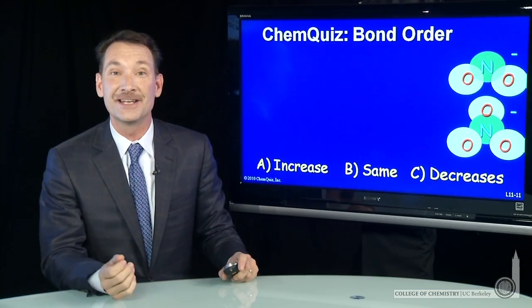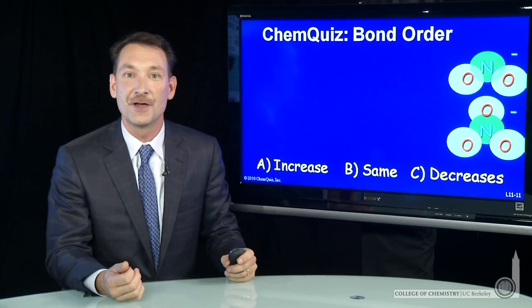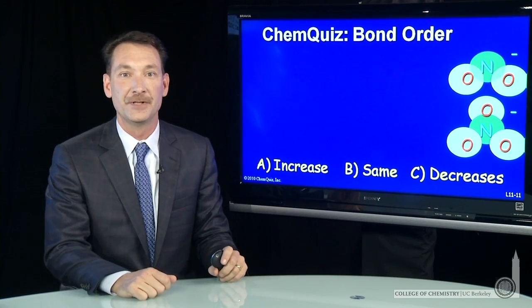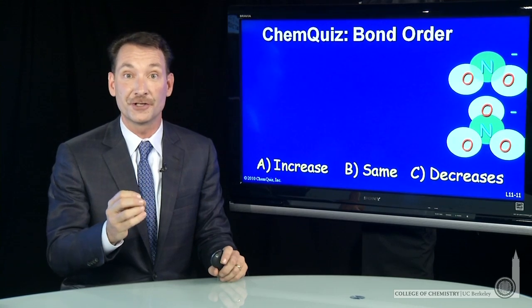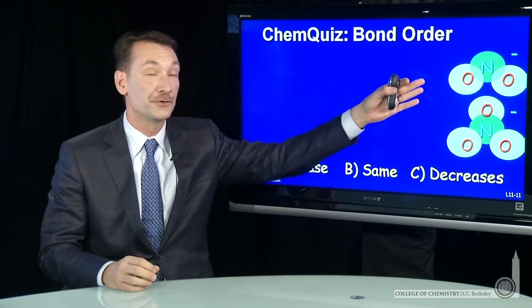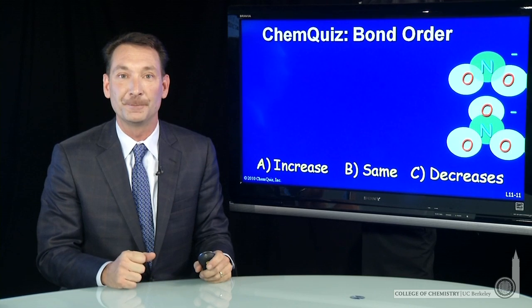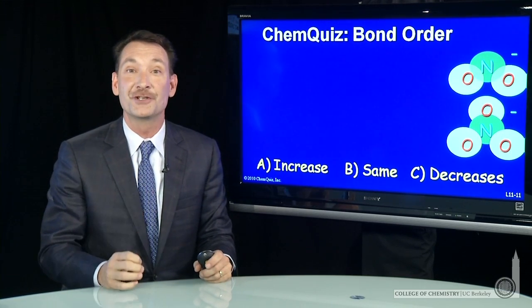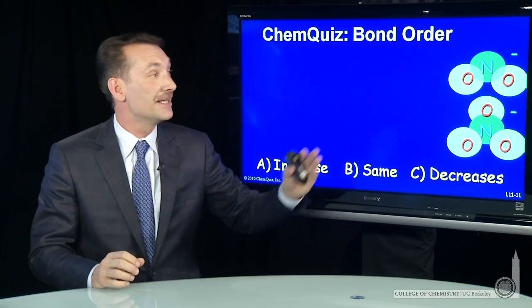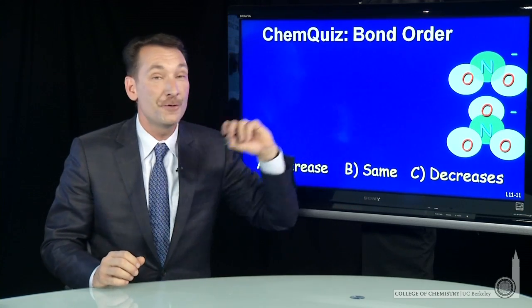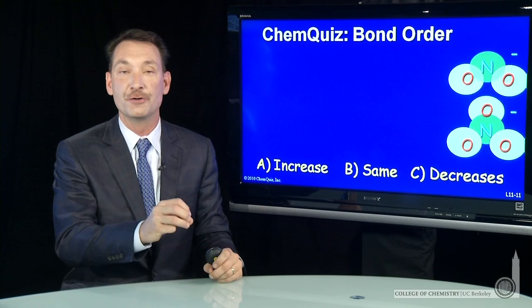We're looking at NO2 minus and NO3 minus and how the bond order changes when we do that oxidation reaction. The way to do this is to draw Lewis dot structures and all the resonance structures for NO2 minus and NO3 minus and determine the bond order. I'm going to show you a shortcut that also works. We're going to recognize that NO2 minus is isoelectronic with something we already know: ozone.